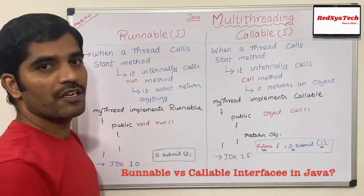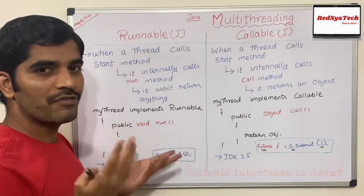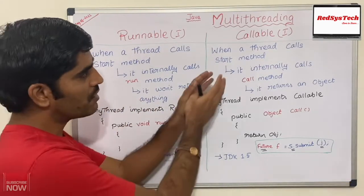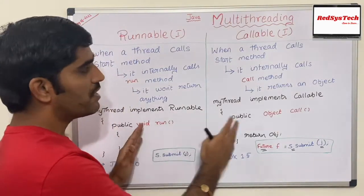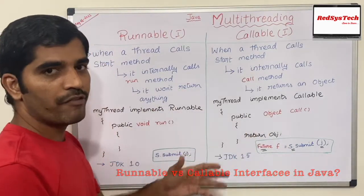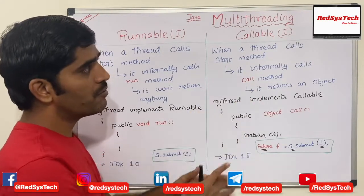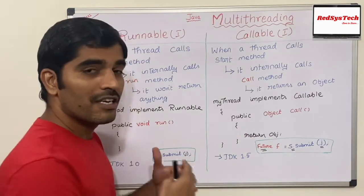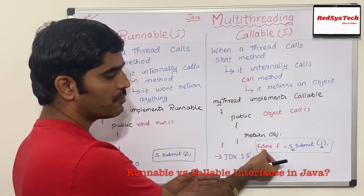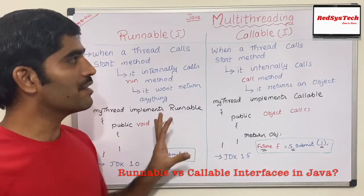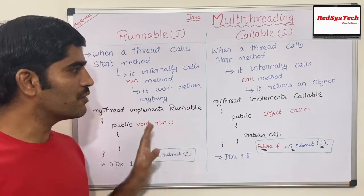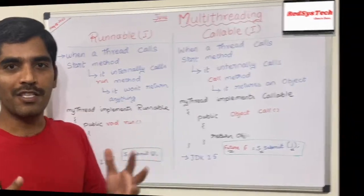So these are the differences between Runnable and Callable interfaces in Java. To summarize: Runnable does not return anything from the run method, while Callable returns an object from the call method — that is the main difference. Runnable was introduced in JDK 1.0 and Callable in JDK 1.5. To receive the object returned from Callable, you use the Future class with s.submit(j). I hope you guys have clearly understood this concept.